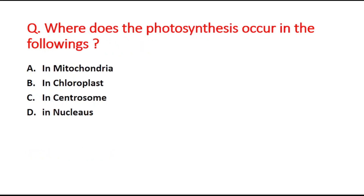Next question: where does photosynthesis occur? Option A is in mitochondria, option B is in chloroplast, option C is in centrosome, and option D is in nucleus. The right answer is option B, that is in chloroplast.